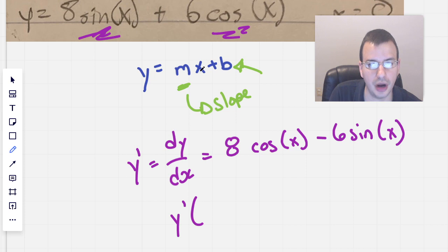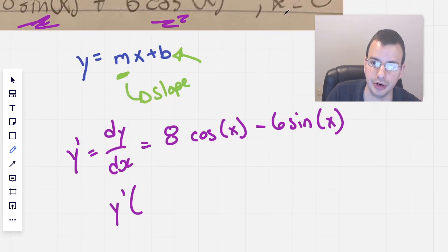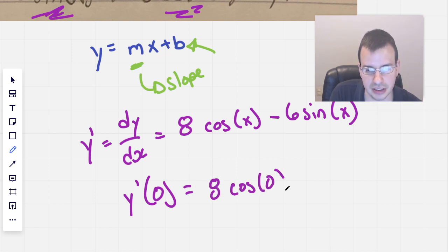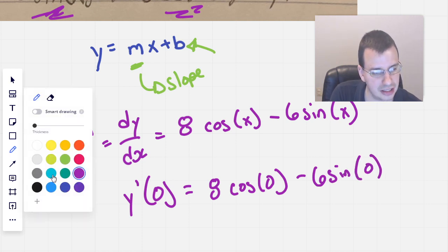But now we want to find y prime at our specific point. Zero. So, y prime of zero, which will be 8 cosine of zero minus 6 sine of zero. Change colors for the canceling. Ooh, green.